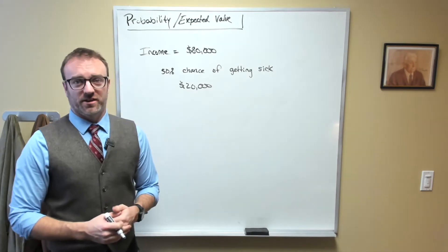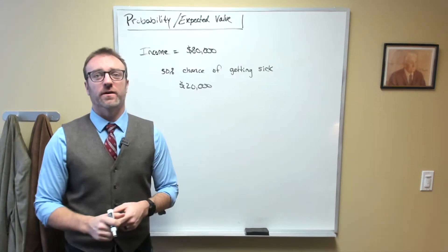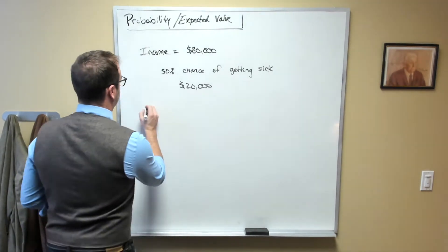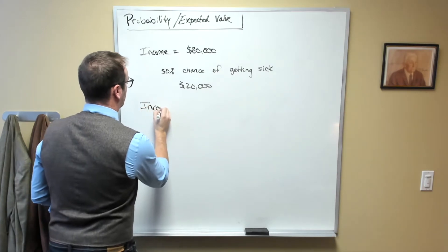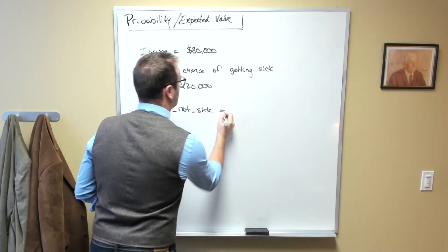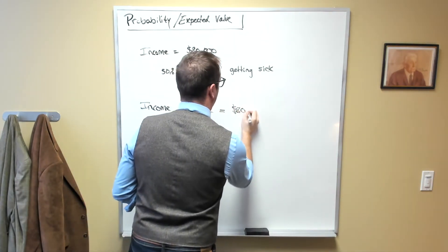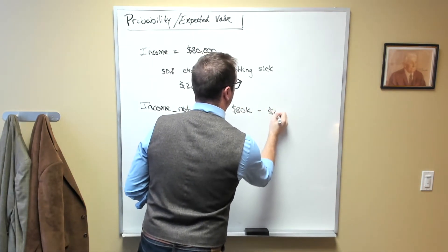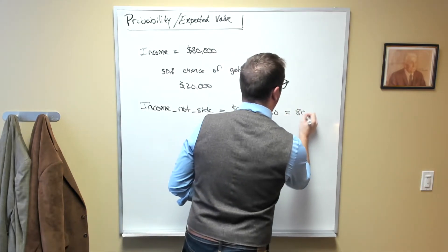Now, if you happen to not get sick, your income net of health payments would be $80,000. So we'll call this income not sick, and that would be $80,000 minus $0 equal to $80,000.